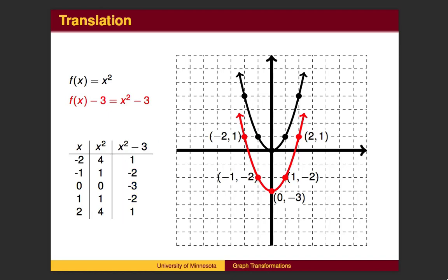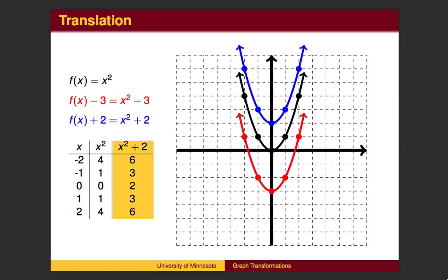Graphically, this moves each point down 3. The red graph is the black graph shifted down 3. Similarly, adding 2 to x squared will increase the y value by 2. The blue graph is shifted up 2.